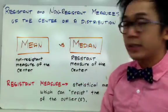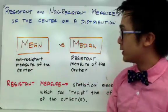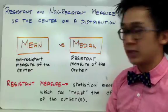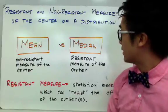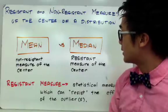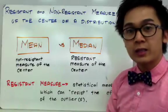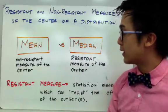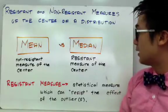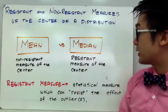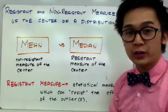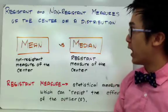The mean, by definition and its property, is a non-resistant measure of the center, whereas the median is a resistant measure of the center. In statistics, a resistant measure means it is a statistical measure which can resist the effect of an outlier or outliers.